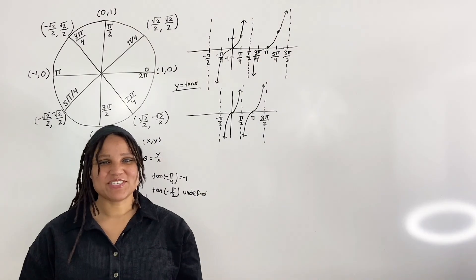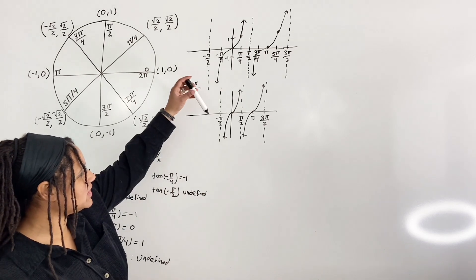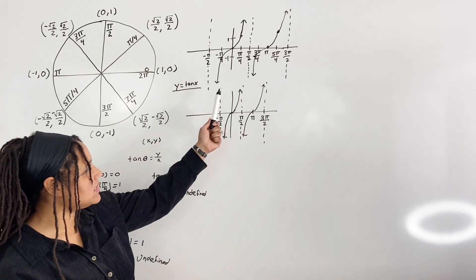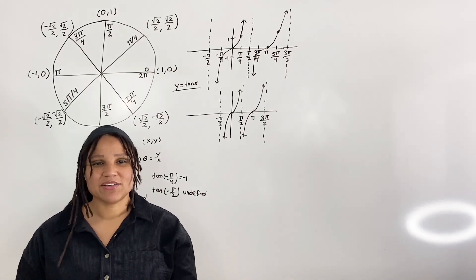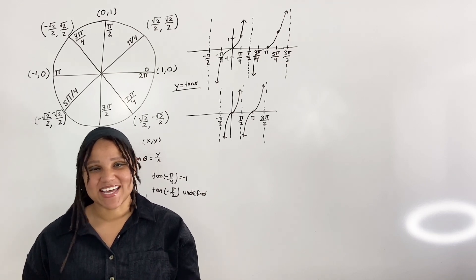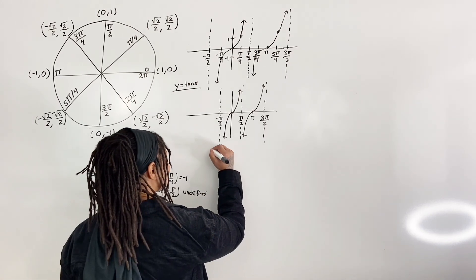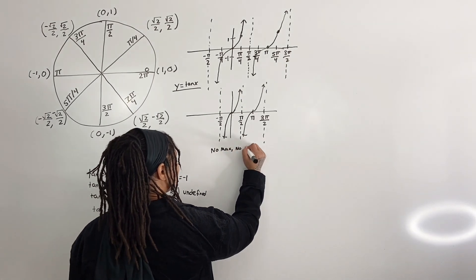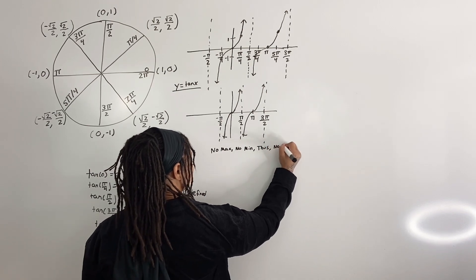Now let us gather some information from our graph. We see that the range of the tangent function is from negative infinity to positive infinity. This means that we have no maximum values and no minimum values. Thus, there is no amplitude — unlike sine and cosine, which have an amplitude. So we say: no max, no min, thus no amplitude.